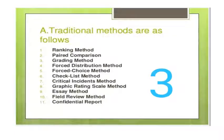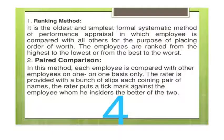These are the further classifications of traditional methods: 1st is ranking method, 2nd is paired comparison, 3rd is grading method, 4th is forced distribution method, 5th is forced choice method, 6th is checklist method, 7th is critical incident method, 8th is graphic rating scale method, 9th is essay method, 10th is field review method, and 11th is confidential report.